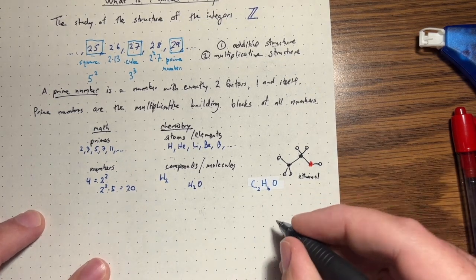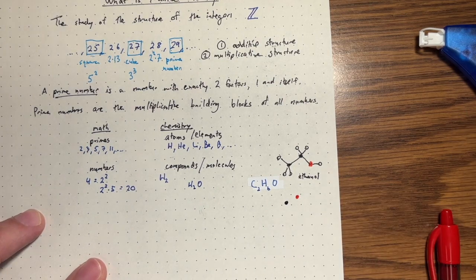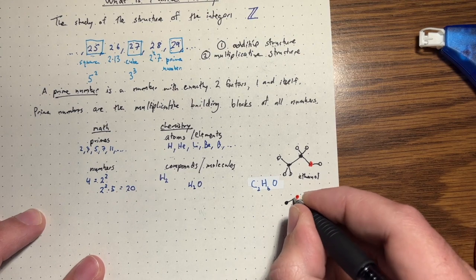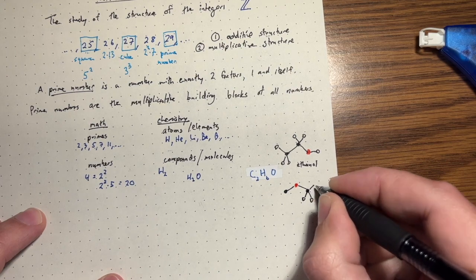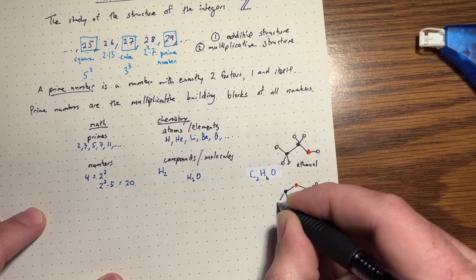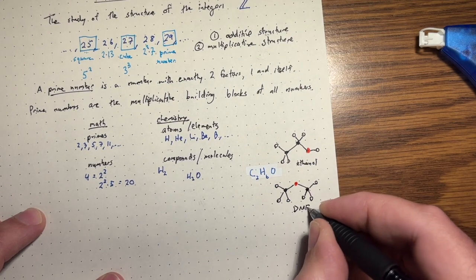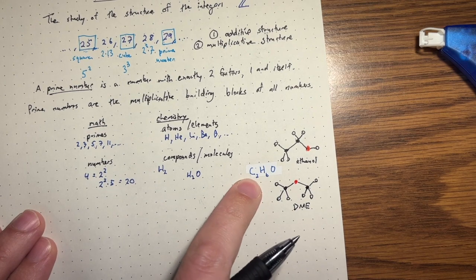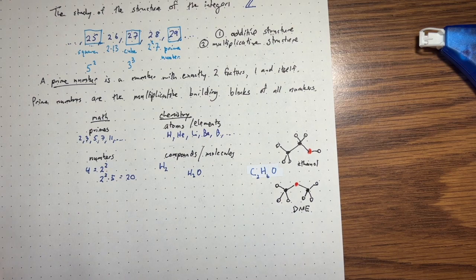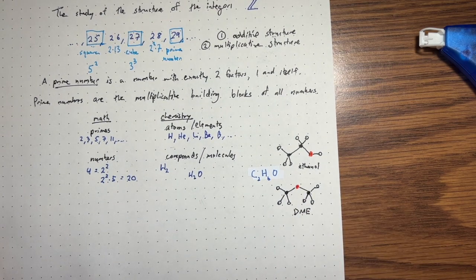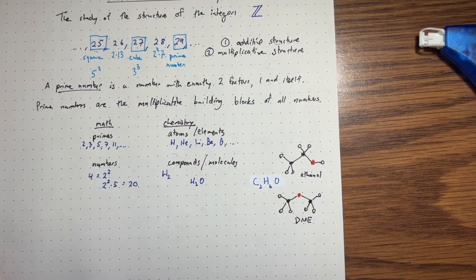Unfortunately, you can also have the oxygen in between the two carbons. Maybe not unfortunately, it's actually rather interesting. You can have the hydrogens here. So this one is dimethyl ether, DME. And you'll notice that these both have the exact same chemical formulas. There are two carbons, there are six hydrogens. There's one oxygen. But this formula does not determine the compound.